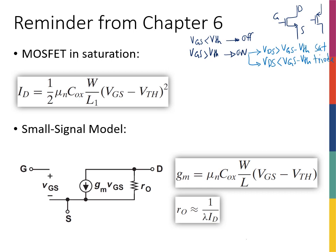We had a special case that if VDS was a lot smaller than VGS minus VTH, we said this is in deep triode. We're not going to talk about that in this chapter. We want our transistor to be in saturation if we want to use it as an amplifier.